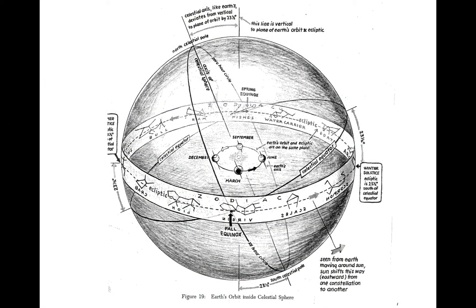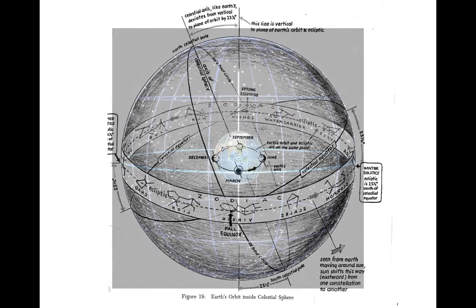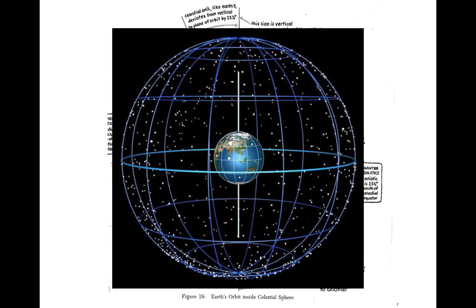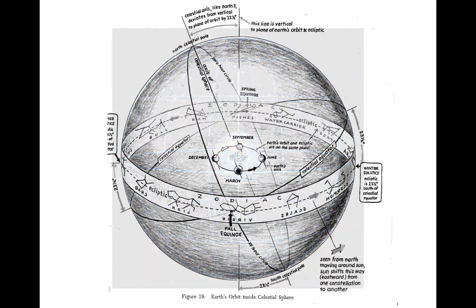I want to use this diagram from The Stars and How to See Them by H.A. Rey to show you what's going on. This diagram should remind you of some of the celestial sphere diagrams we've looked at, but there's a big difference. This diagram shows the entire Earth's orbit and is going to help us understand the yearly motion of the night sky, rather than just the 24-hour motion.